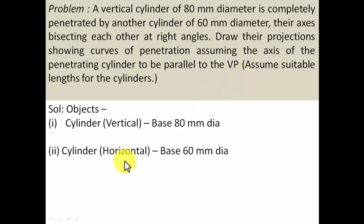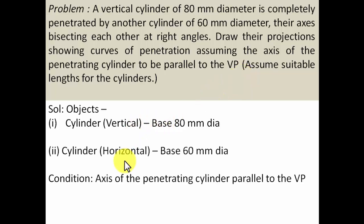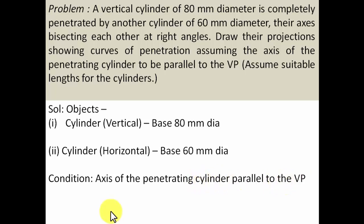There are two objects: a vertical cylinder and a horizontal cylinder. I'm going to assume the length of both cylinders to be 120 millimeters. The condition is that the axis of the penetrating cylinder is parallel to the VP, so its top view is going to be parallel to the XY line.